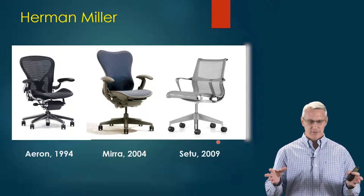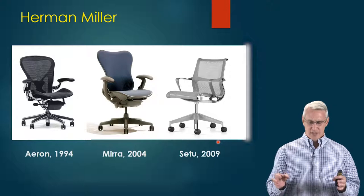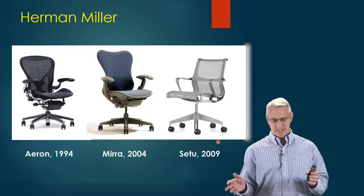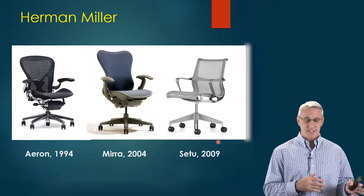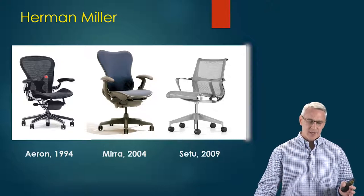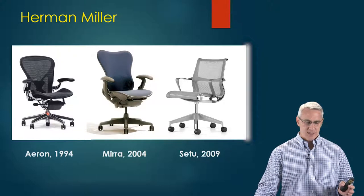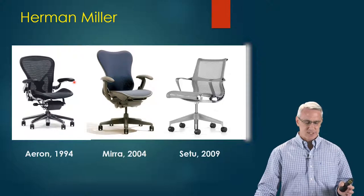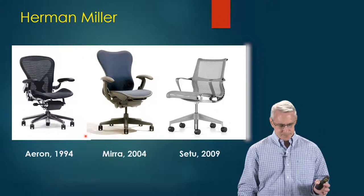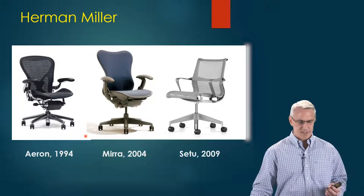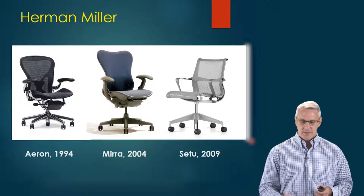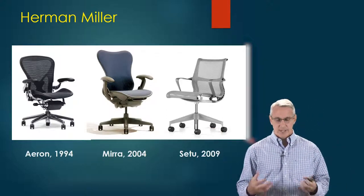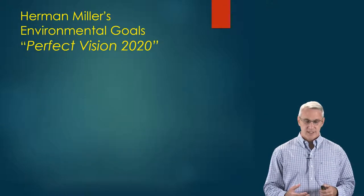Here we look at an example. If you look at how the Herman Miller chair has changed over the last decade — back to around 2009 — where they were in 1994 they had a completely unsustainable product: a lot of chrome bases, different types of fabrics and materials, they weren't recycling anything, it was hard to disassemble. Slowly over time they got better and better at integrating all the DFE principles, all the way to the C2 model — something very recyclable and easy to put back into play.